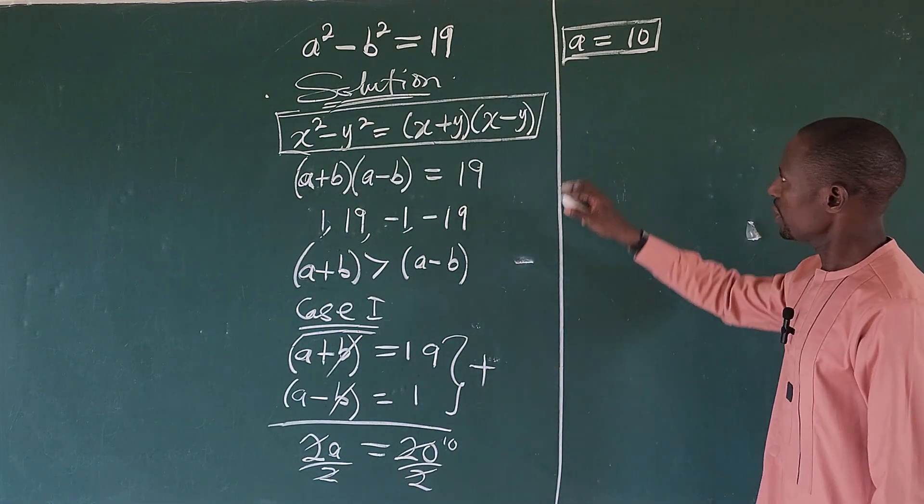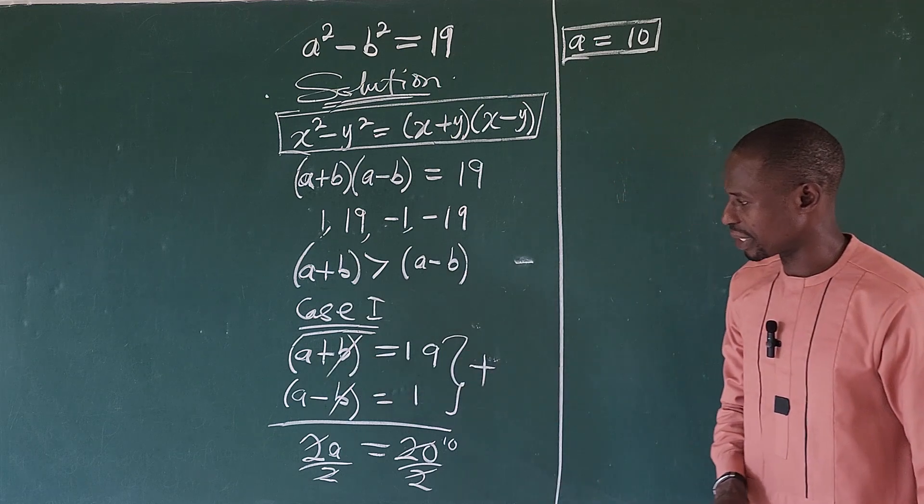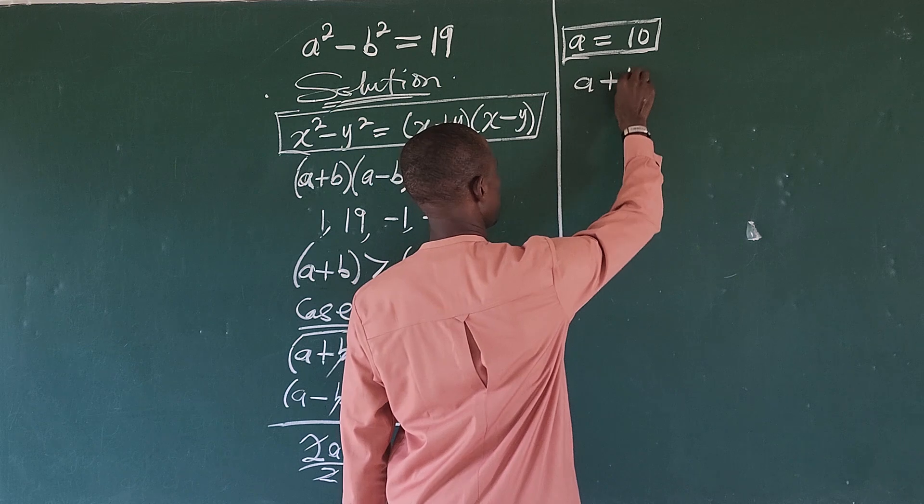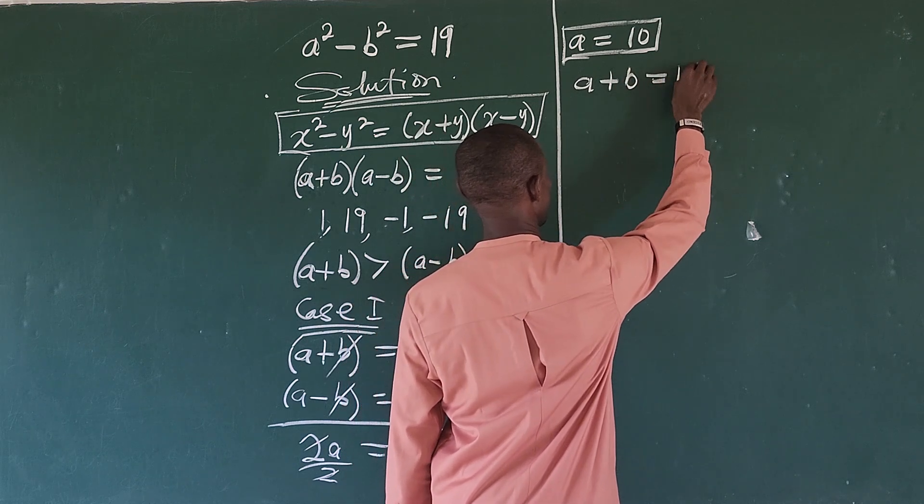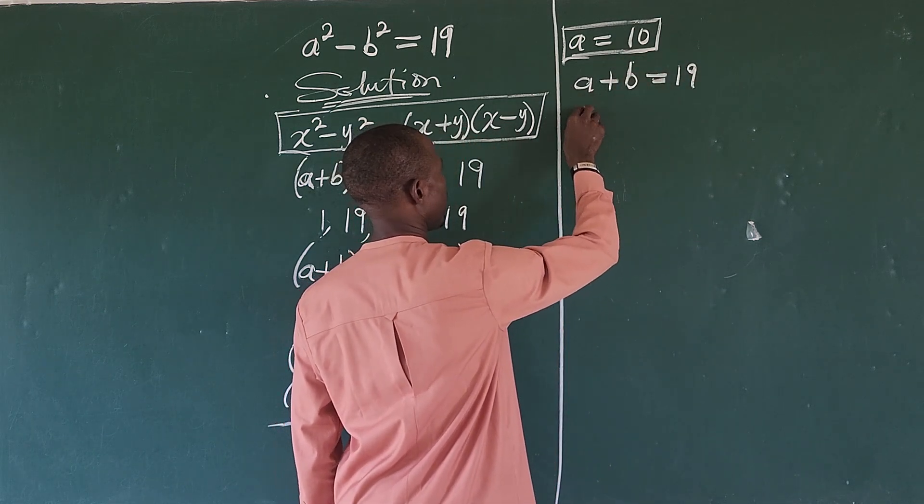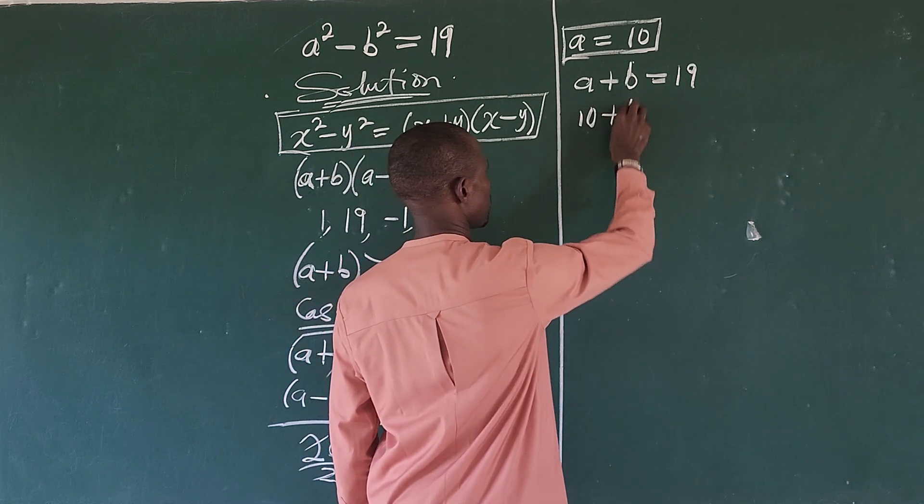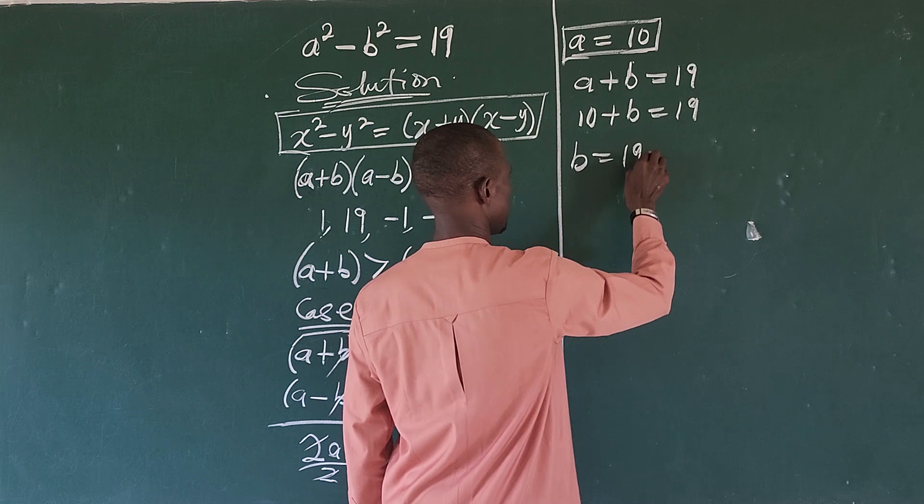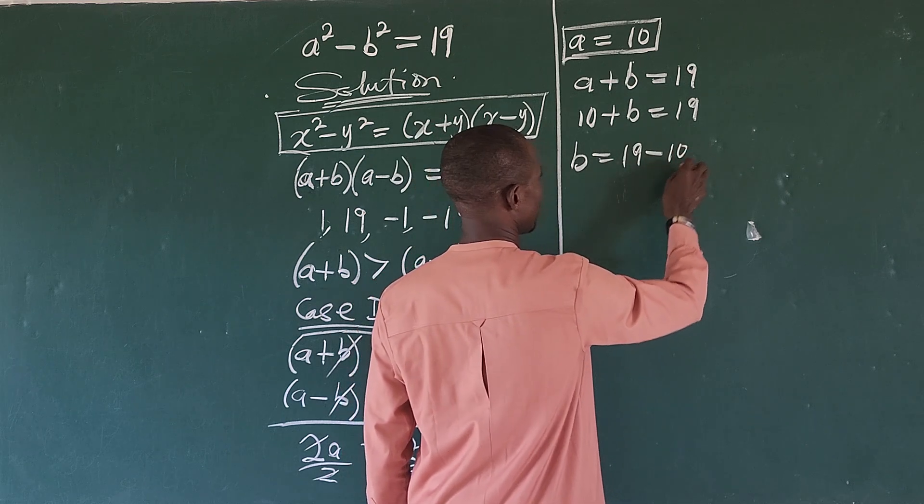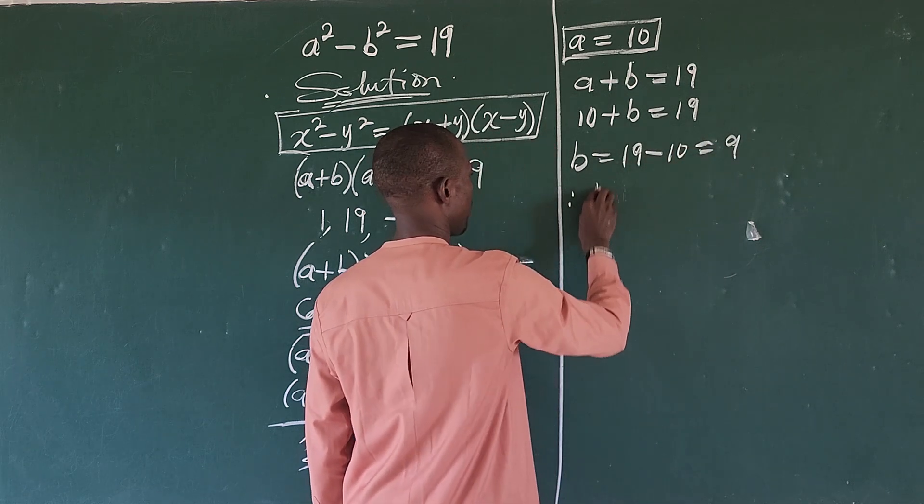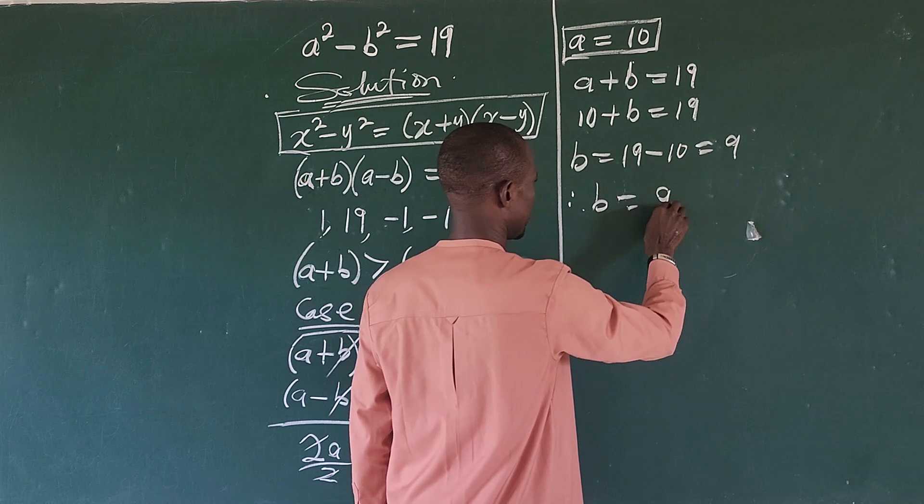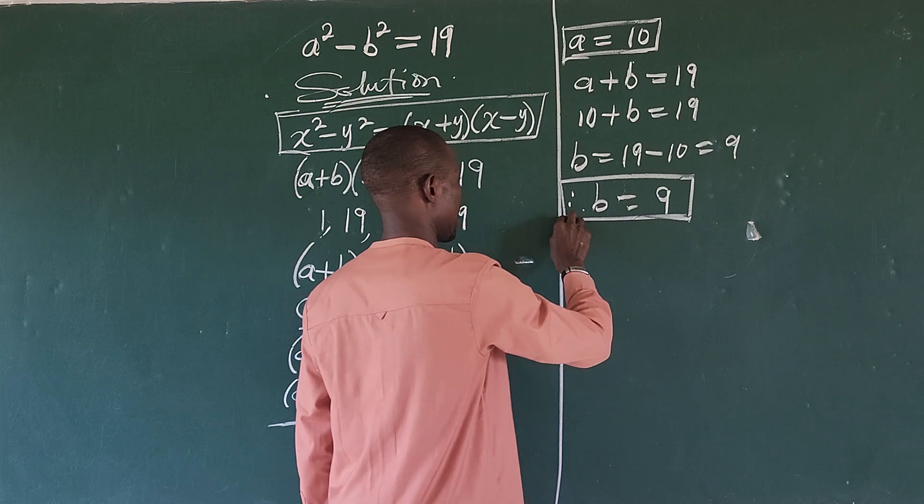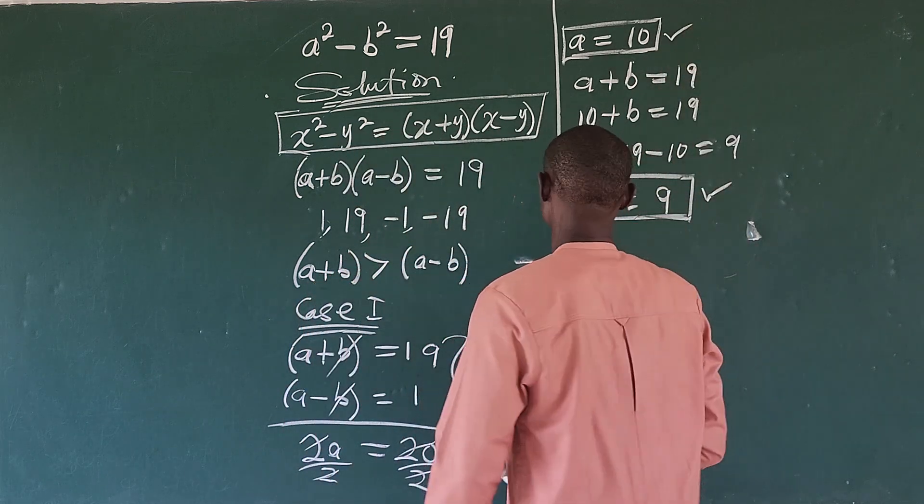So we can put the value of a into the first equation to get our b here. So from our second equation, we have a+b = 19. So we have 10 + b = 19. So we have b = 19 - 10, which is equal to 9. So therefore b = 9. So this and this go together.